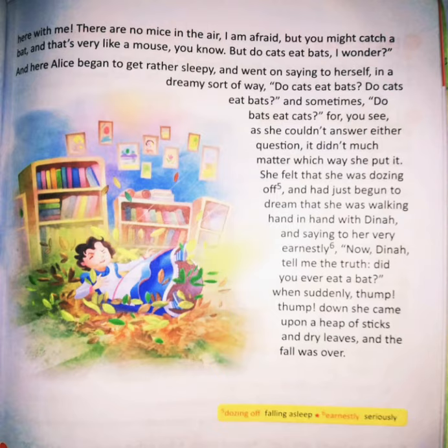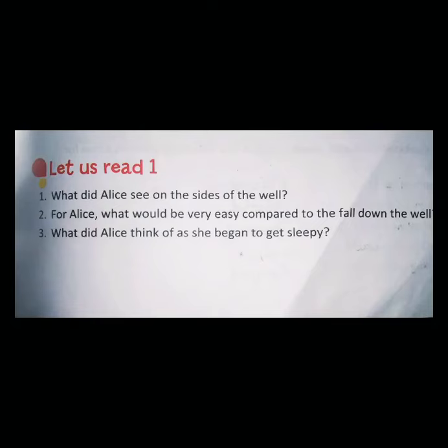Hope you understood this chapter. Now let's discuss question answers. First question: what did Alice see on the sides of the well? Alice saw cupboards and bookshelves. She also saw maps and pictures hung upon pegs on the sides of the well. Second question: for Alice, what would be very easy compared to the fall down the well? Falling down the stairs would be very easy compared to the fall down the well. Third question: what did Alice think of as she began to get sleepy? She thought: do cats eat bats, or do bats eat cats?